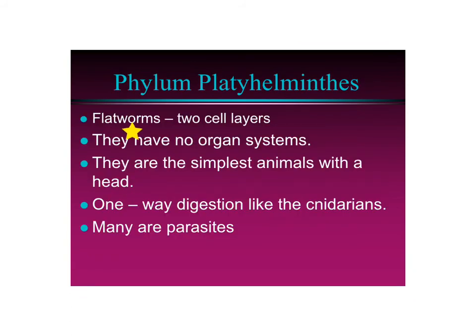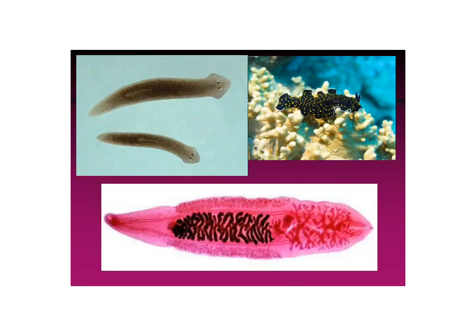Phylum platyhelminthes — the flatworms — has only two cell layers, very simple organisms. They have no organ systems, just like the cnidarians. These are the simplest animals with a head; they have bilateral symmetry and sense organs in the front. But they still have a one-way digestive system like the cnidarians — they eat, digest, and the waste comes back out the mouth. Many of these are parasites. Examples include planaria, which live in ponds; marine flatworms, which live in the ocean; and the liver fluke, which is a parasite that makes you very sick.